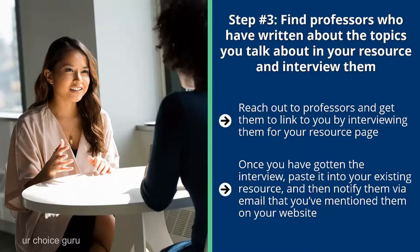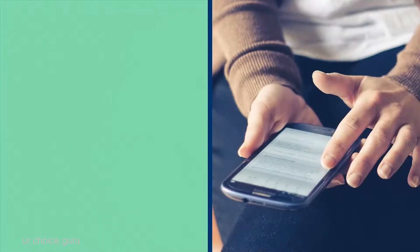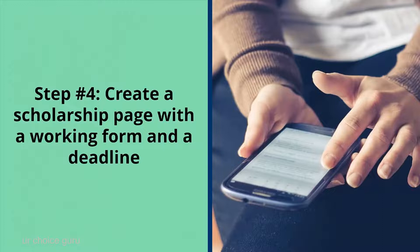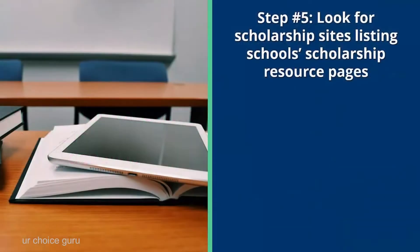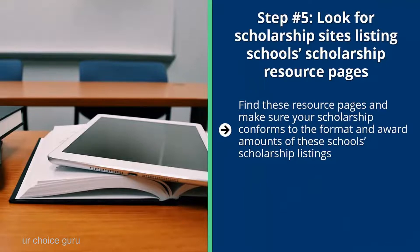Step three: find professors who have written about the topics you cover and interview them. Reach out to professors and get them to link to you by interviewing them for your resource page. Once you have the interview, paste it into your existing resource and notify them via email that you've mentioned them on your website. Professors love seeing their names mentioned in authoritative sites — they like this so much they would link to you from their .edu blogs. Step four: create a scholarship page with a working form and a deadline. Step five: look for scholarship sites listing schools' scholarship resource pages, make sure your scholarship conforms to the format and award amounts, and contact the schools to get your scholarship listed.